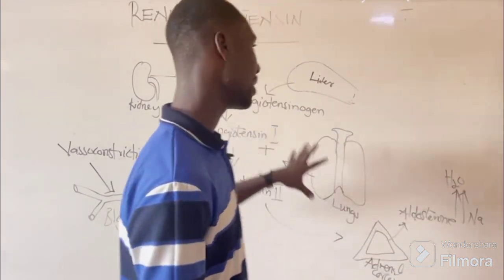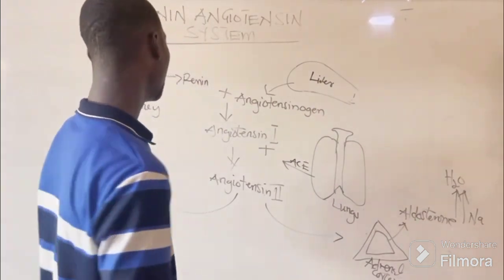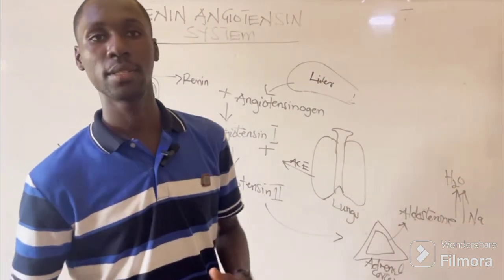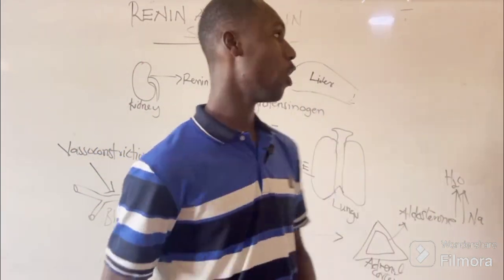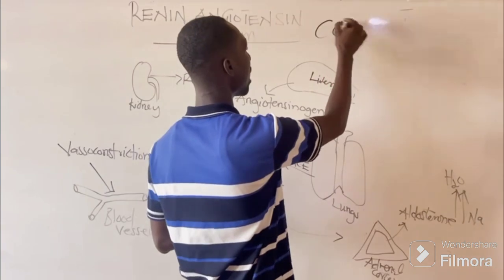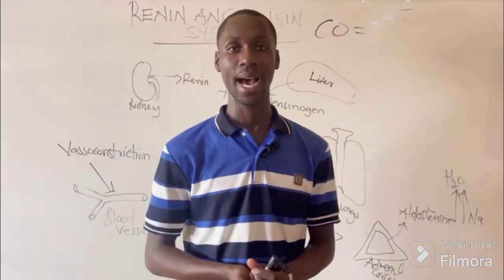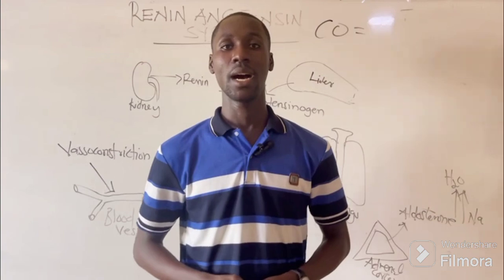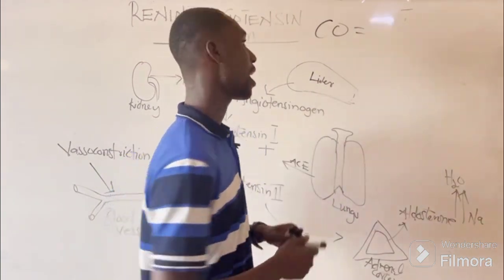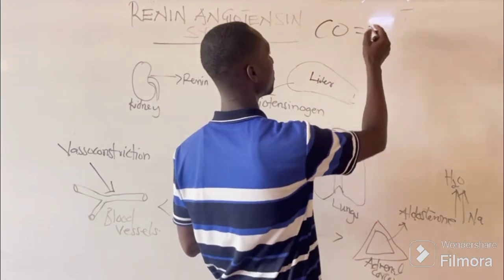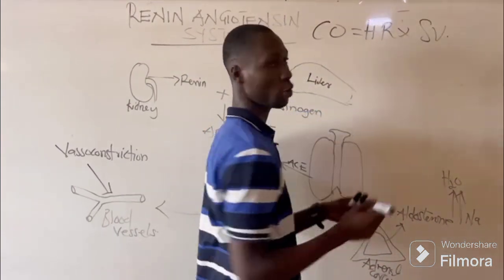This is a short summarization of everything. From the beginning, whenever there is low cardiac output in the body — and we all know that cardiac output is the volume of blood being circulated in the whole body per one cardiac cycle — the formula for cardiac output is heart rate times stroke volume.